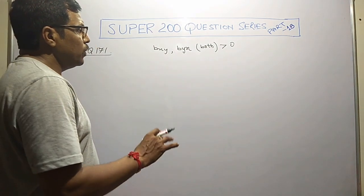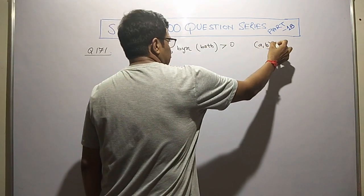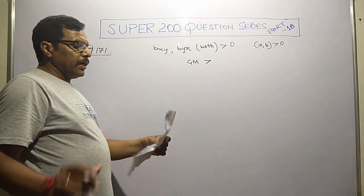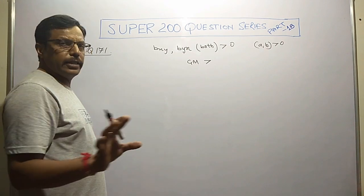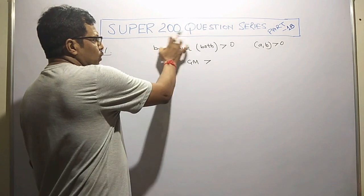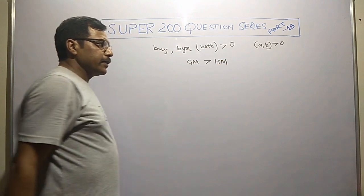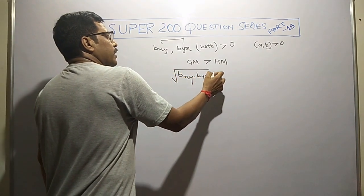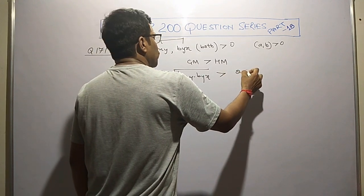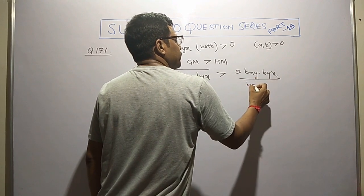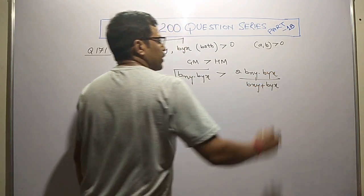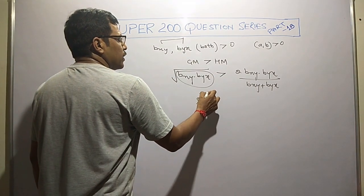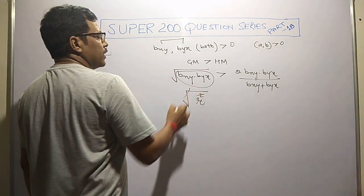We know when two numbers are given to us and they are greater than zero, then their geometric mean is greater than harmonic mean. The geometric mean of these two values is square root of their product, and harmonic mean is two times product of these two divided by their sum.